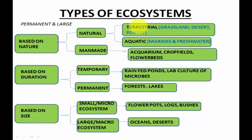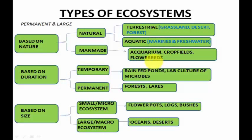There are majorly two types of natural ecosystems: terrestrial and aquatic. The other type, based on nature, is man-made ecosystems. Examples of man-made ecosystems include aquariums, crop fields, and flower beds. These are not natural and are relatively smaller ecosystems compared to natural types. Based on duration — whether they are available for a longer or shorter time — ecosystems are again of two types: temporary and permanent.